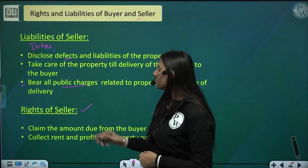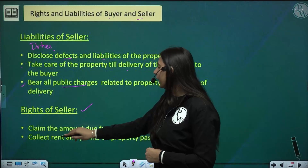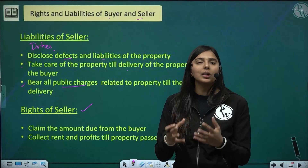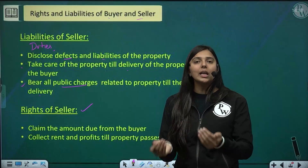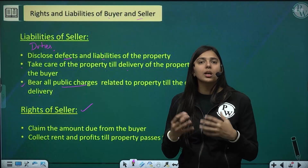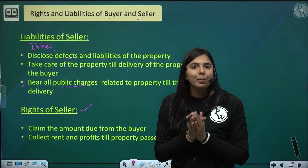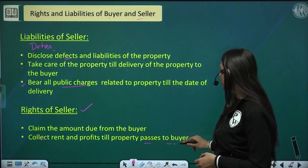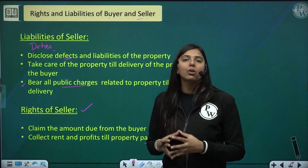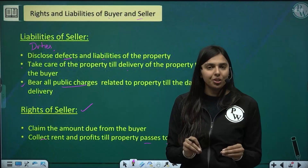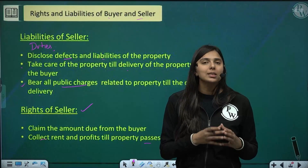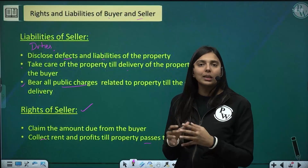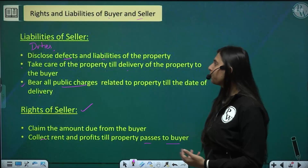Now, the rights of the seller. First, he can claim the amount due from the buyer. Once the seller has transferred possession of the property to the buyer, he has the right to receive the consideration — the price. Additionally, the seller can collect rent and profits from the property until it passes to the buyer. Once the property is transferred, all rent and profits go to the buyer.